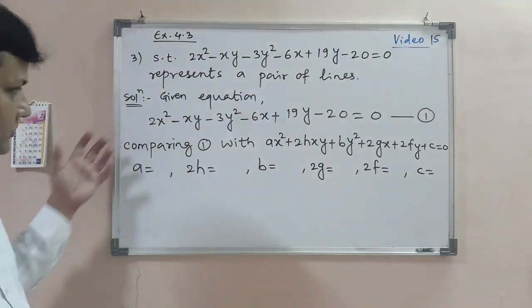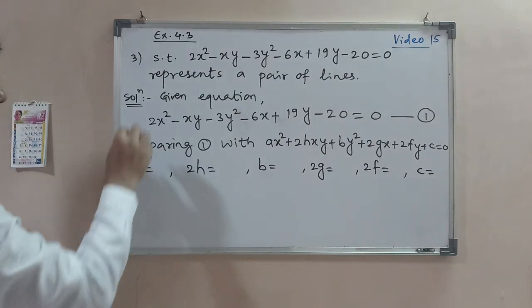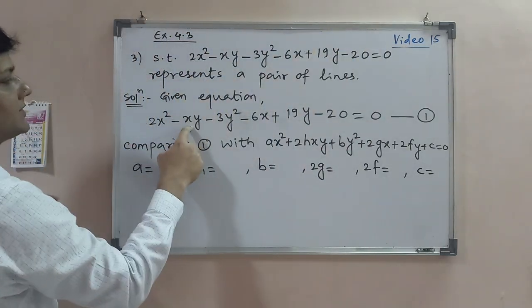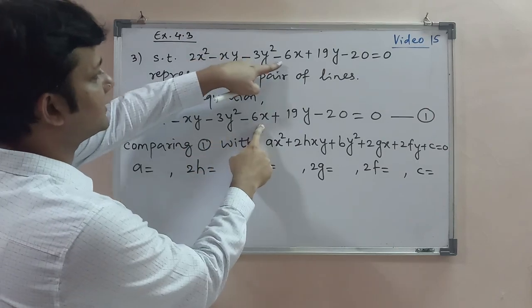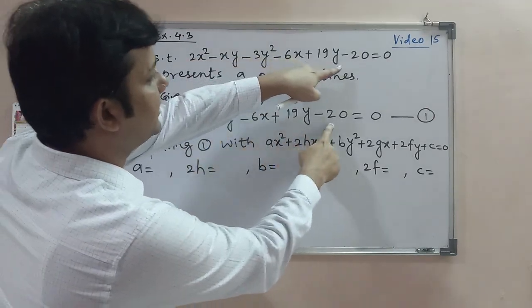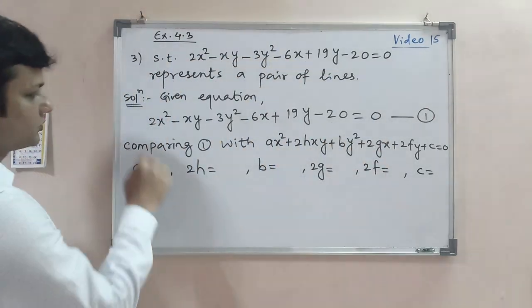First, I have the given equation: 2x² - xy - 3y² - 6x + 19y - 20 = 0. We will compare this with the non-homogeneous equation.